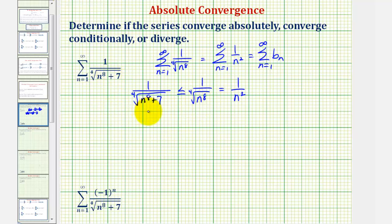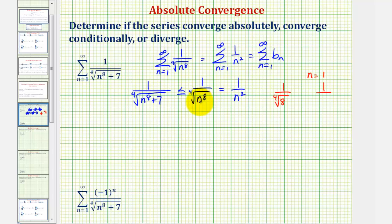Let's look at the first few terms generated by a sub n and b sub n. When n equals one, a sub n gives one divided by the fourth root of one to the eighth plus seven, or one divided by the fourth root of eight. For b sub n, when n is one we have one divided by the fourth root of one to the eighth, or the fourth root of one, which is just one. Because this fraction has a larger denominator, it's smaller, so it is true that a sub n is less than or equal to one. When n is two, a sub n gives one divided by the fourth root of two to the eighth — that's 64 — plus seven, so the fourth root of 71.